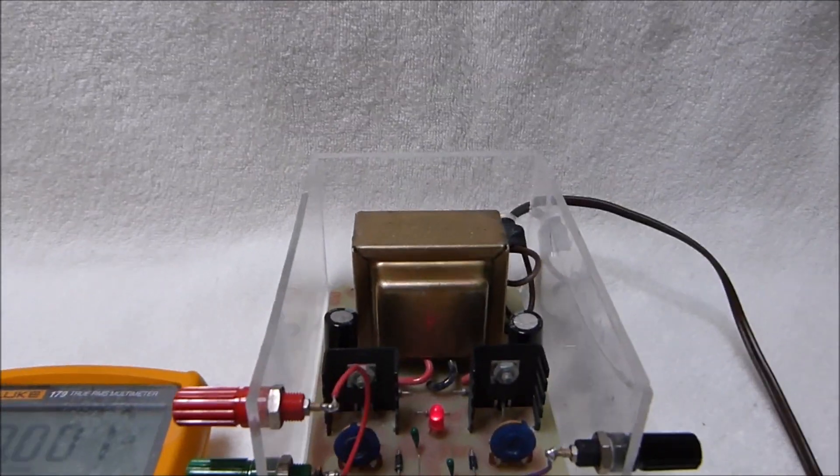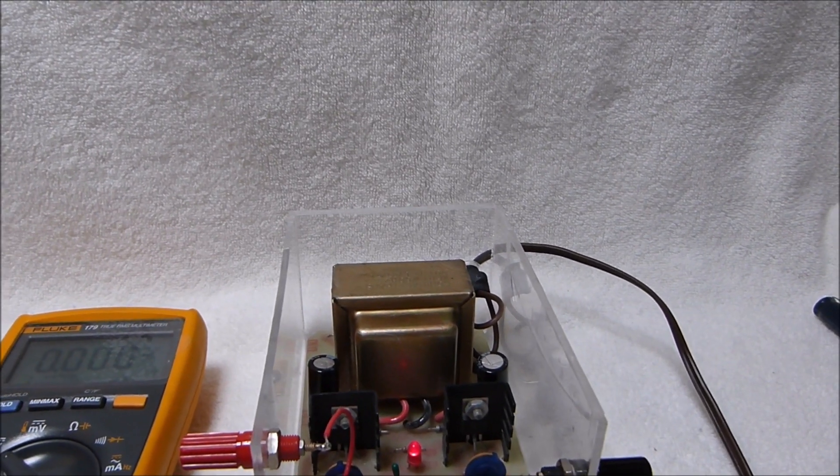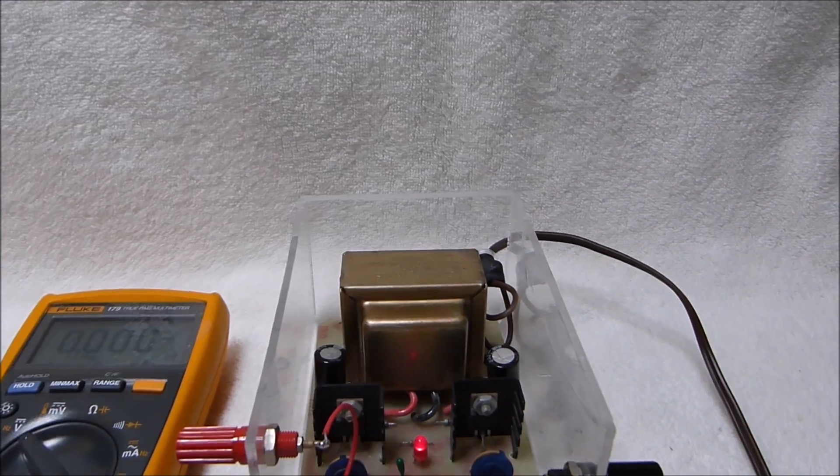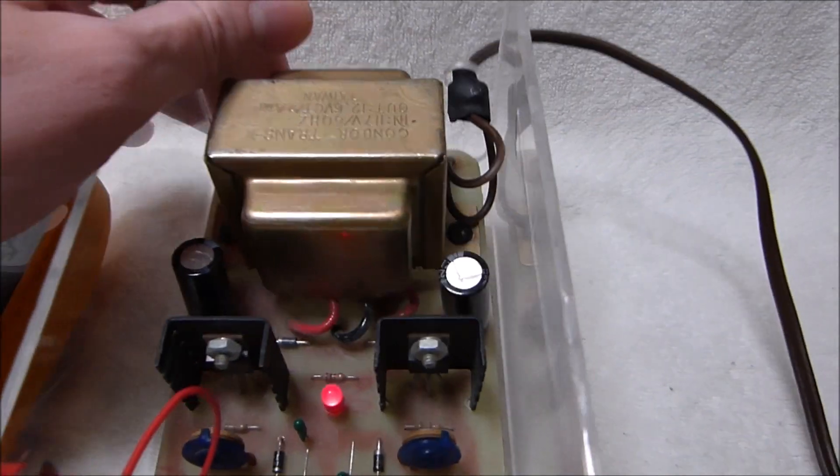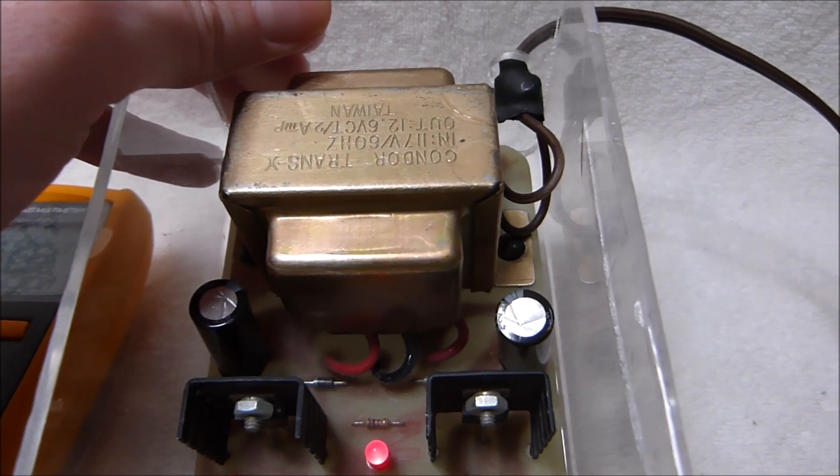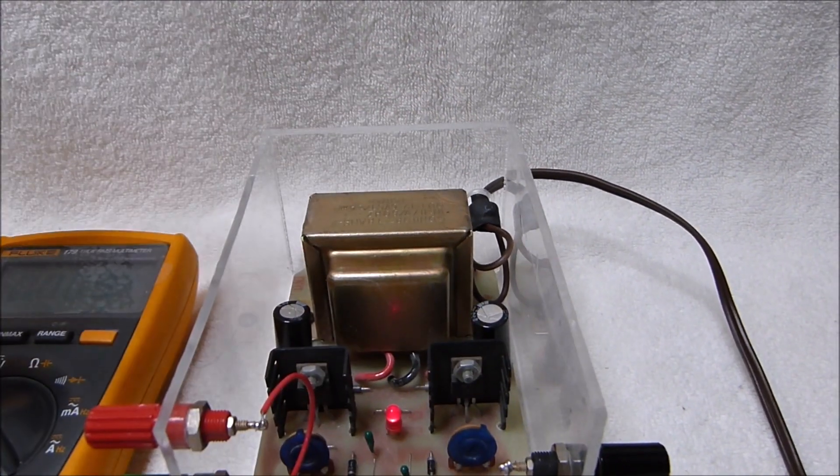This is a linear power supply. The advantage of that is there's no switching noise but the disadvantage is it's quite inefficient. They claim 1 amp from each output but that's really pushing this thing pretty hard. It's got 1 amp rectifier diodes and it's just doing half wave rectification. These things are rated for 1 amp max.